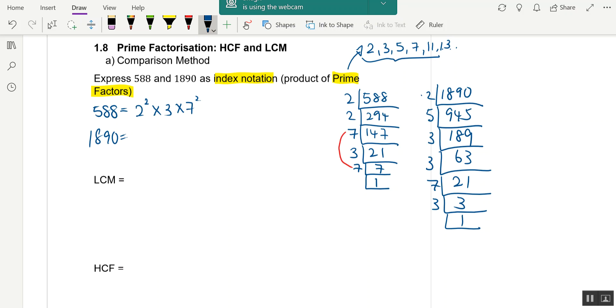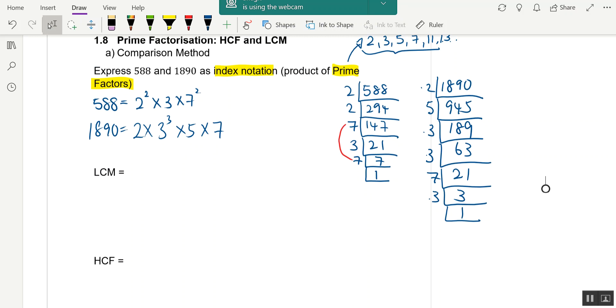So 1890 equals 2 times 3³ times 5 times 7. This is how you express as index notation or product of prime factors.